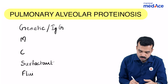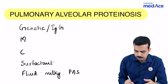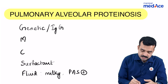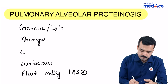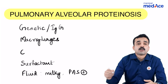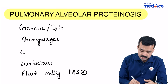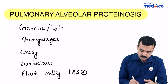This fluid, if you do a bronchoalveolar lavage, will turn out to be very milky and will be staining positive for PAS. And this basically occurs because of a dysfunction of macrophages. When you do a CT scan on HRCT thorax, you will see that the lung has a crazy paving pattern.